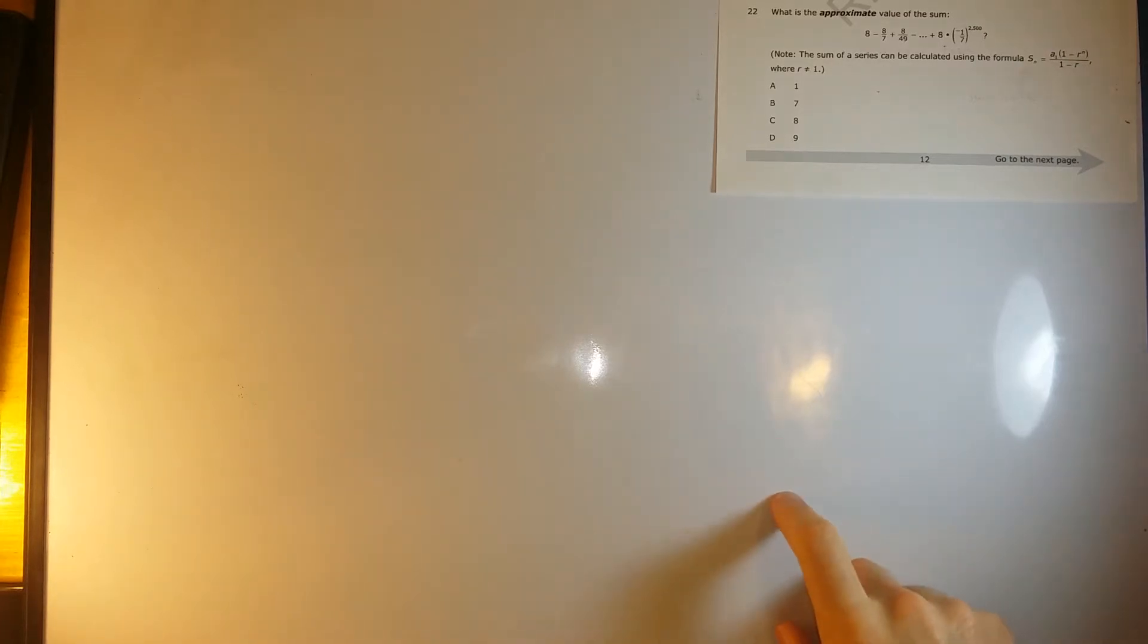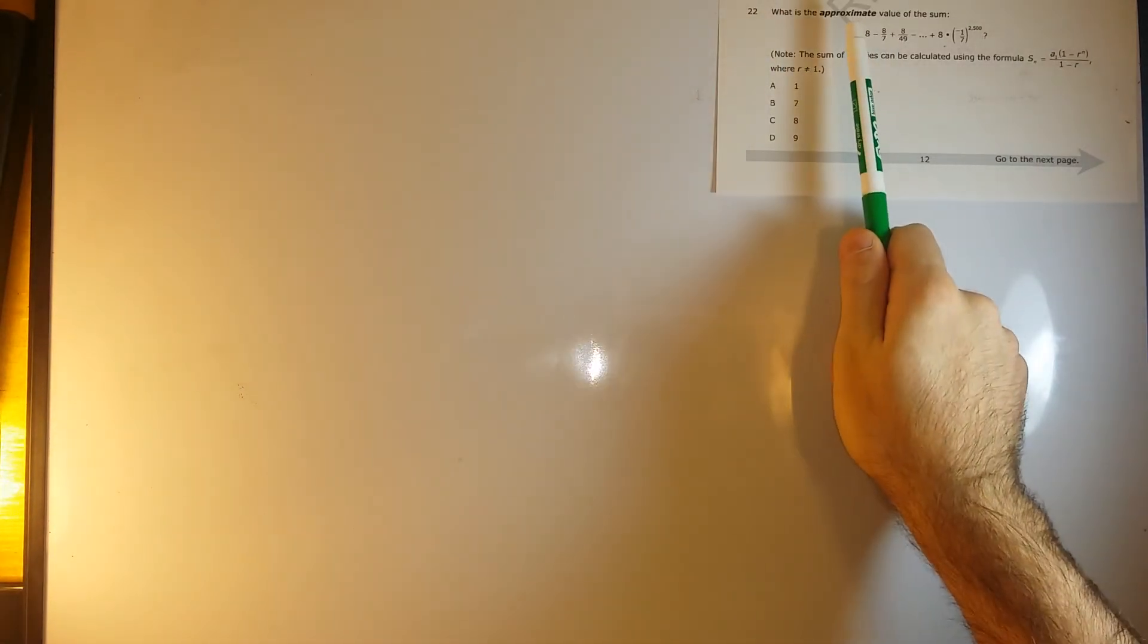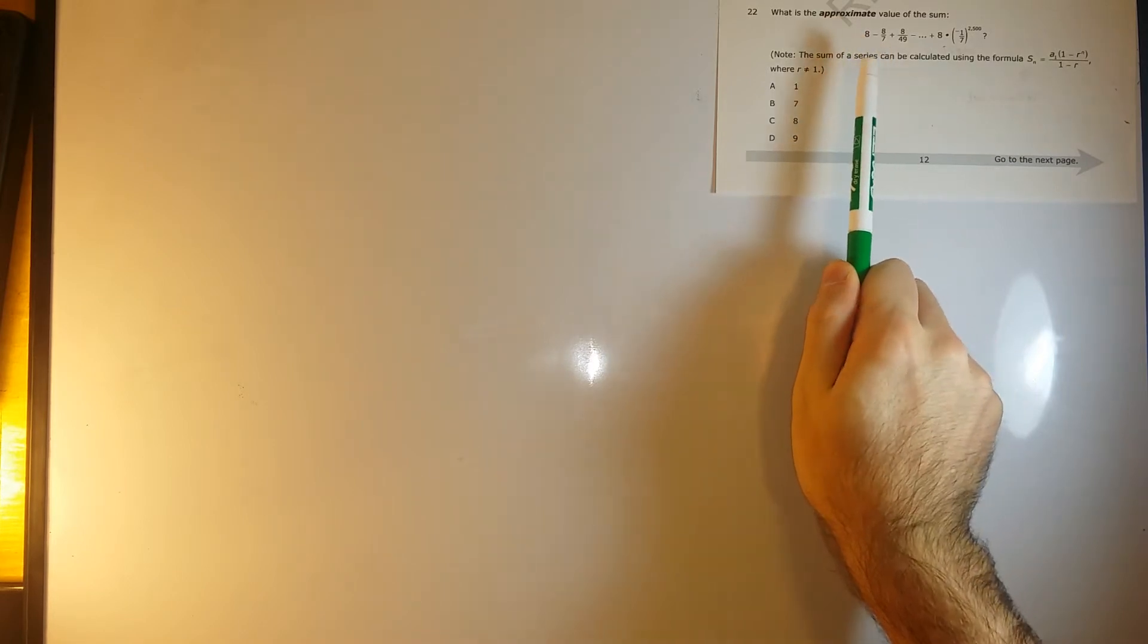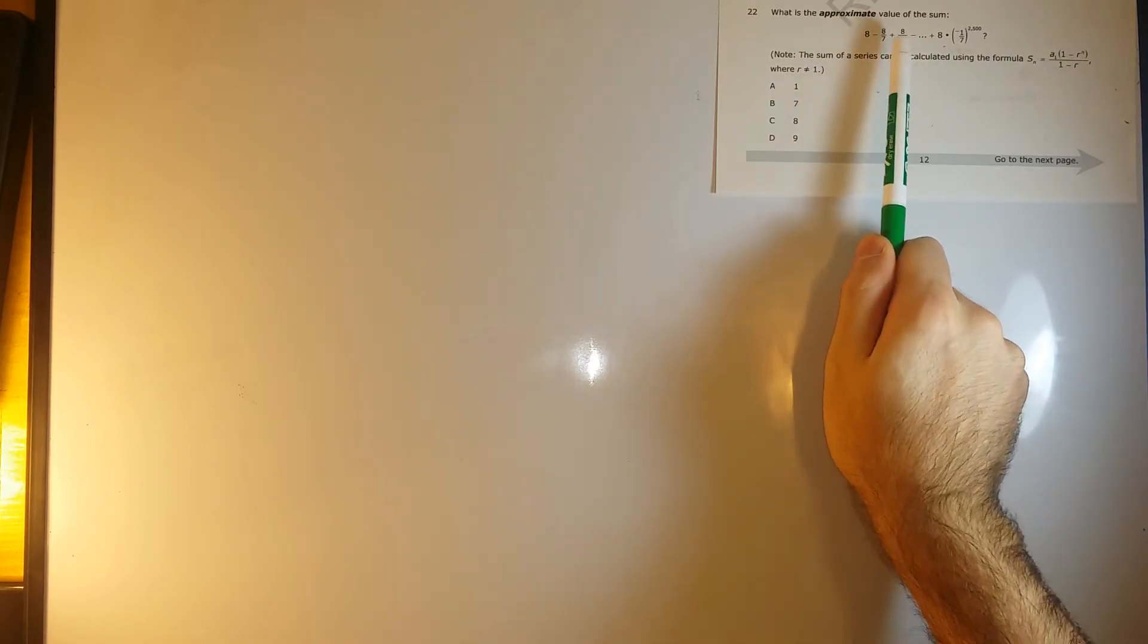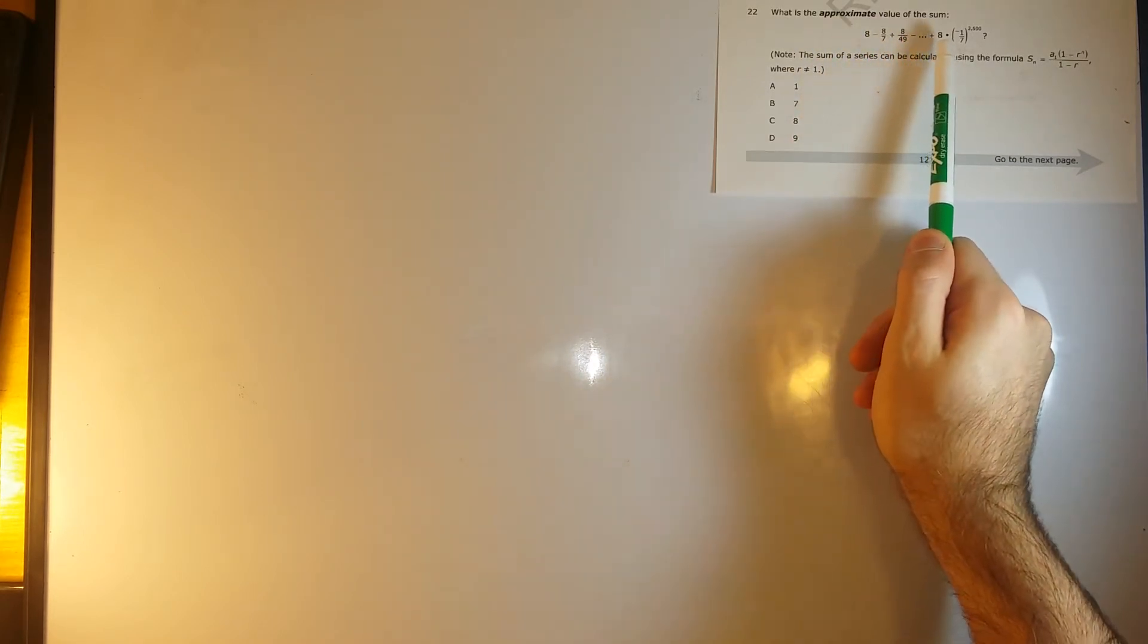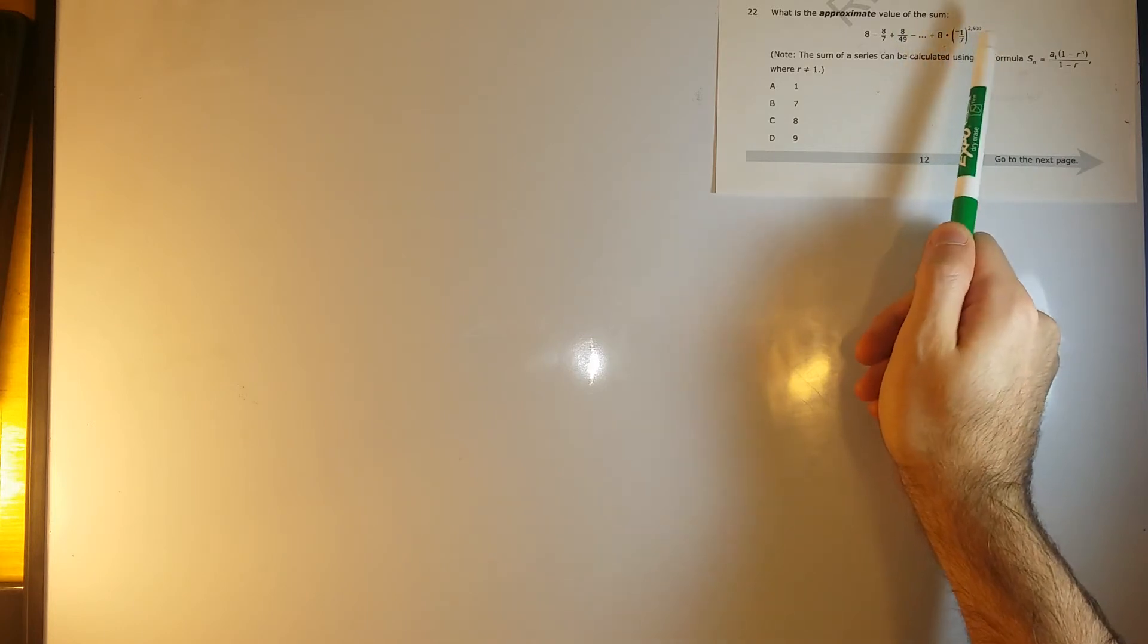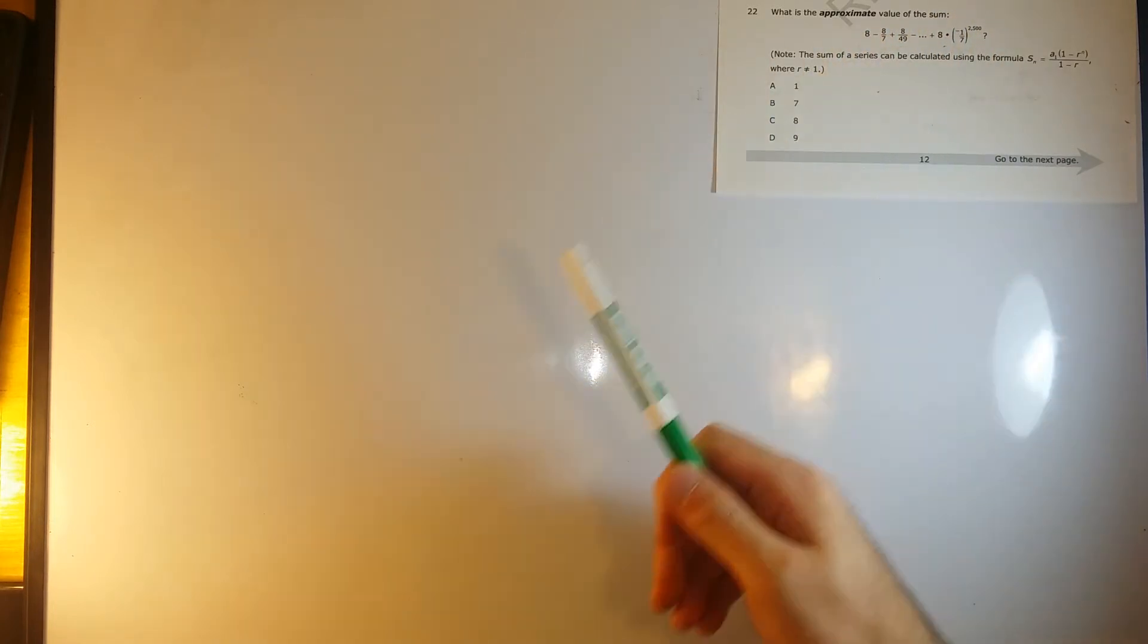Okay, problem number 22. What is the approximate value of the sum? 8 minus 8 over 7 plus 8 over 49 minus dot dot dot plus 8 times negative 1 over 7 raised to 2,500.